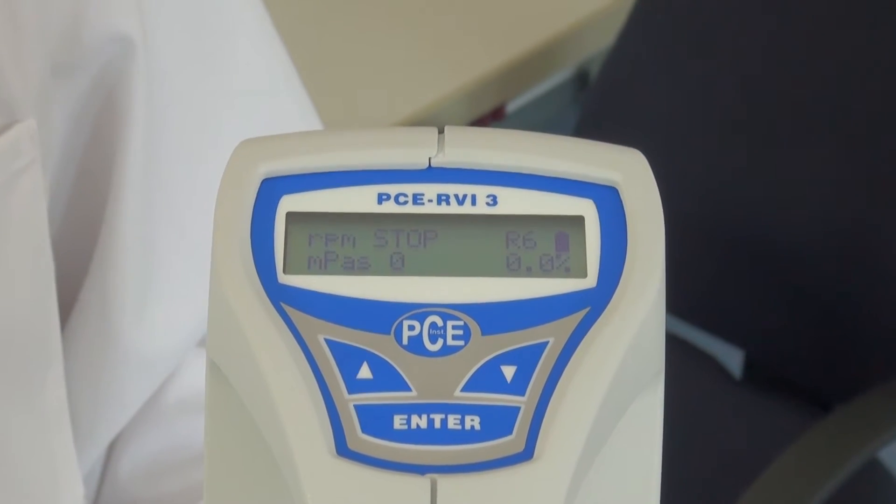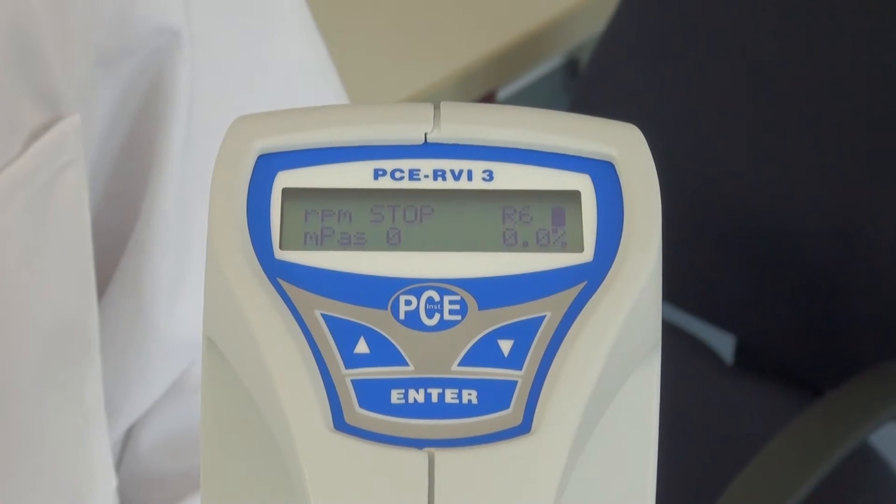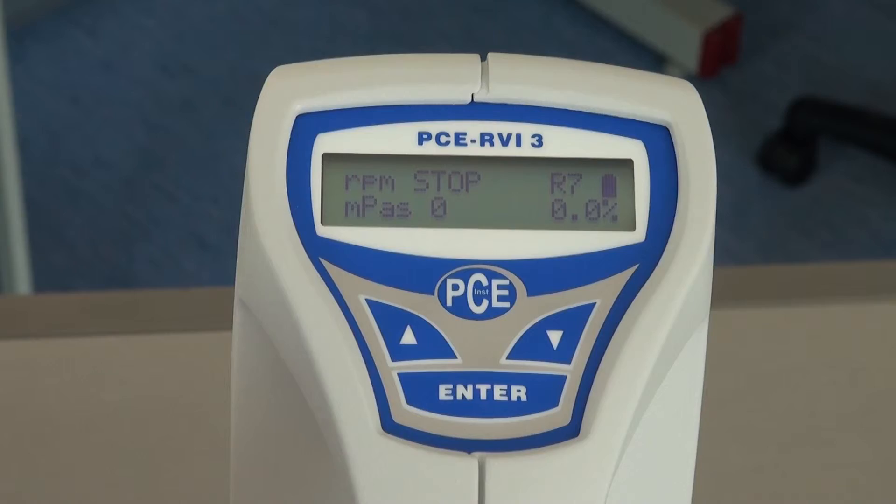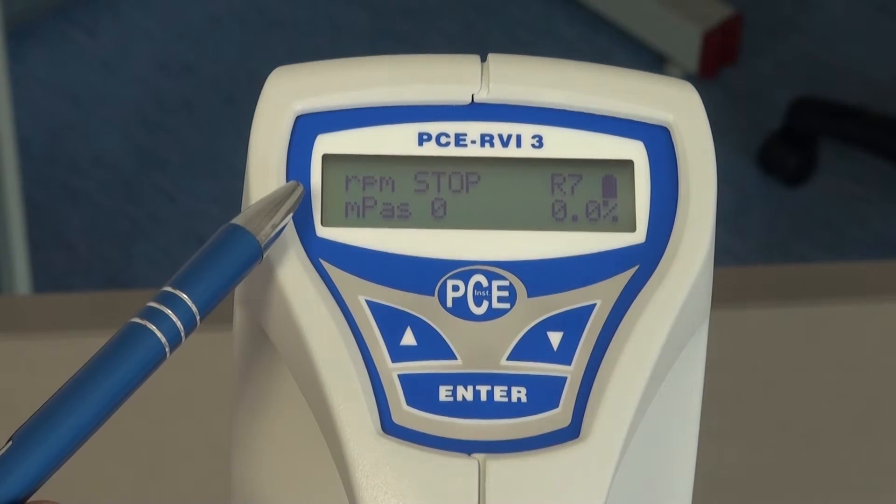Then the measuring device boots up and the measuring area is shown. What can I see? At the top I can see the revolutions per minute.